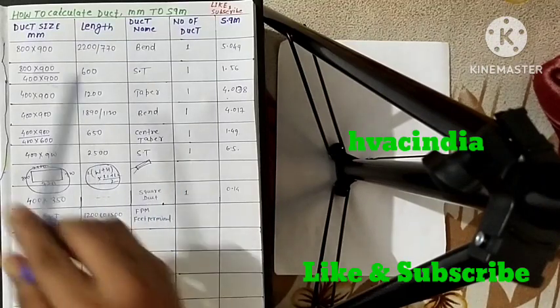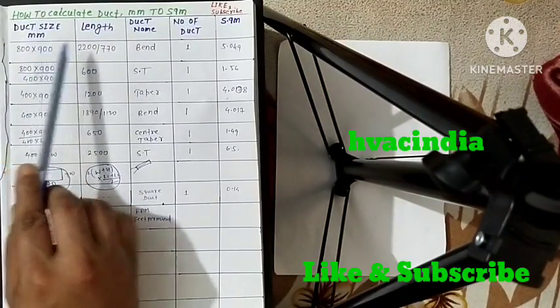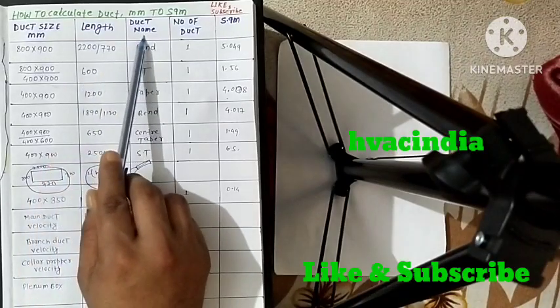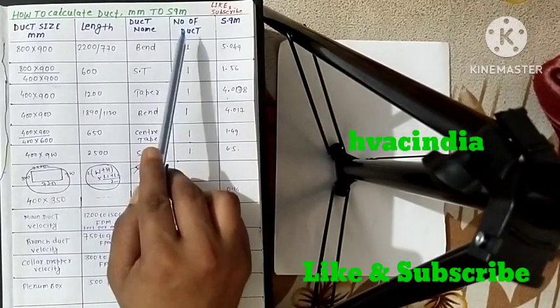Let's talk about this. This is the duct size in mm, this is the length, this is the duct name, which is the piece, which is the number of duct.